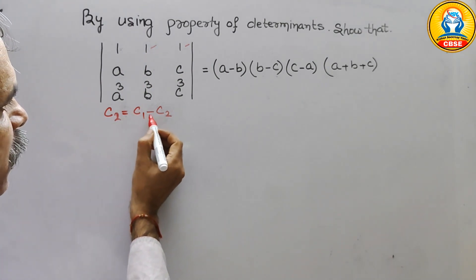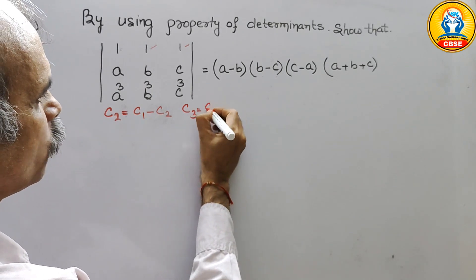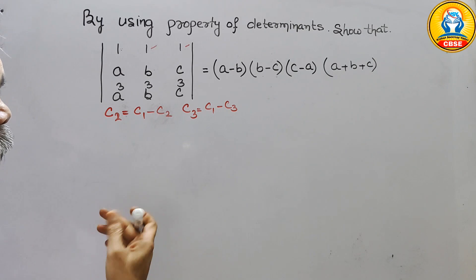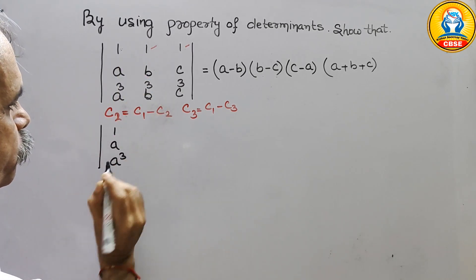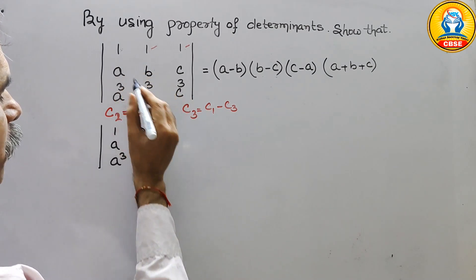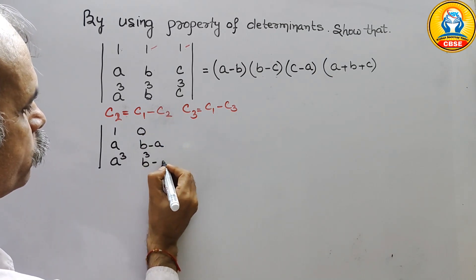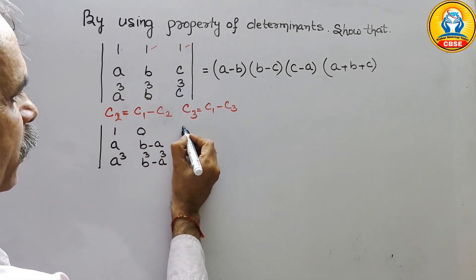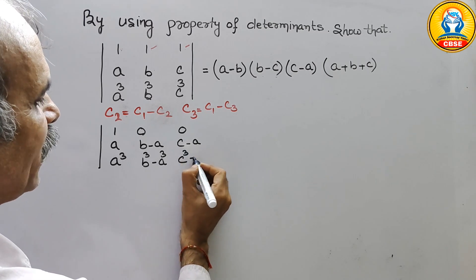So C2 becomes C1 minus C2, and C3 becomes C1 minus C3. Column 1 remains unchanged: 1, a, a³. For the second column: 1 minus 1 is 0, then b minus a, then b³ minus a³. For the third column: 1 minus 1 is 0, then c minus a, then c³ minus a³.